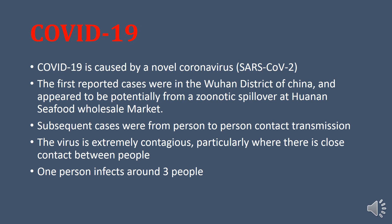COVID-19 is caused by the novel coronavirus SARS-CoV-2. The first reported cases were in the Wuhan district of China, and it appeared to originate from a zoonotic spillover at the Huanan Seafood Wholesale Market — meaning it first came from animals to humans. Subsequent cases were from person-to-person contact transmission.